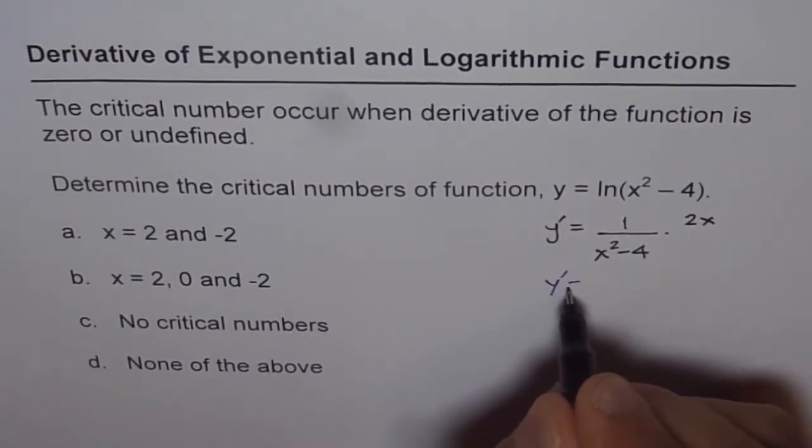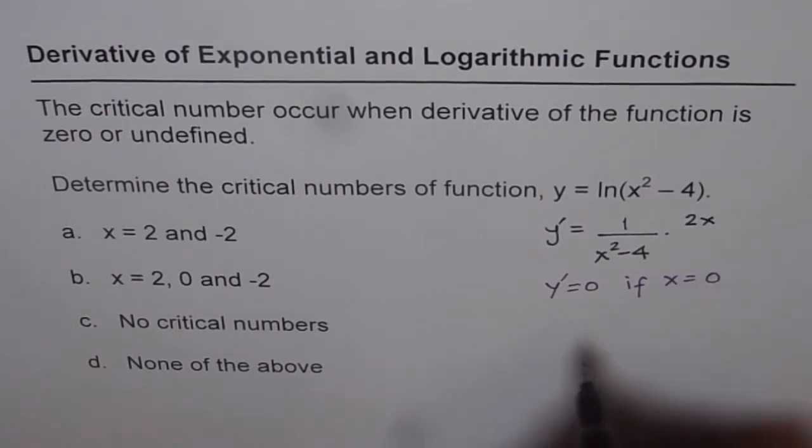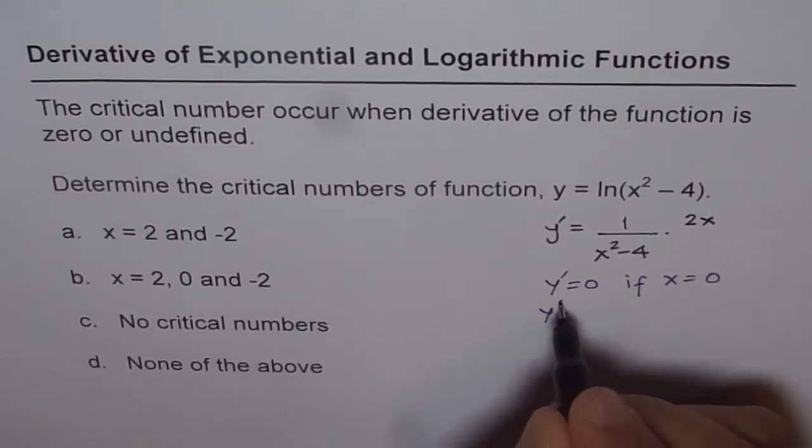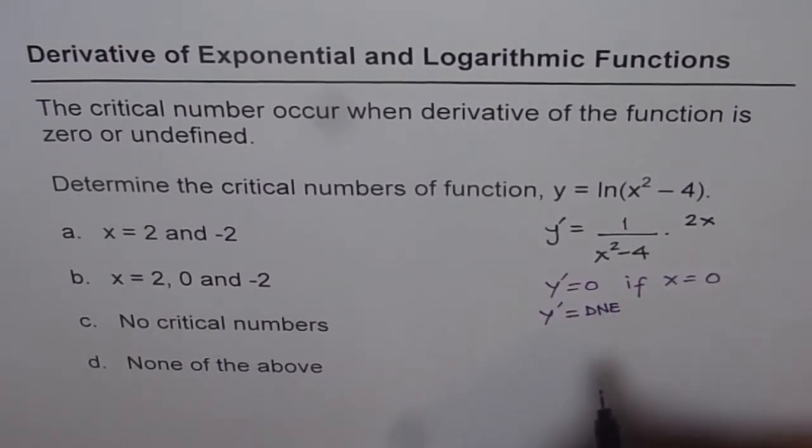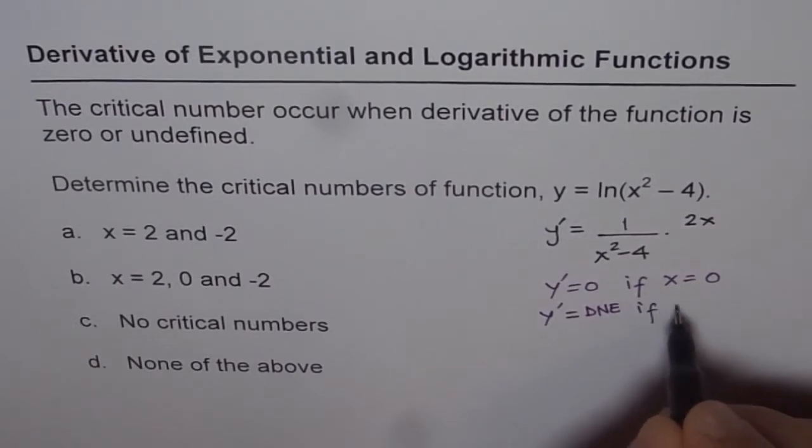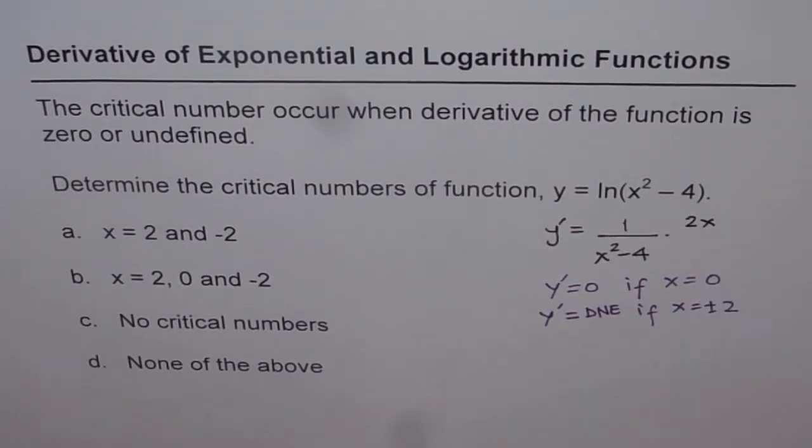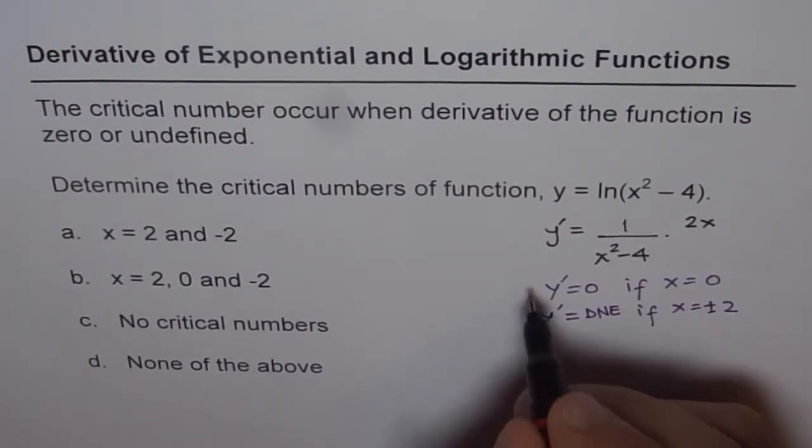From here we know y' equals 0 if x equals 0, and y' does not exist or is undefined if x equals plus or minus 2. These are possible critical numbers.